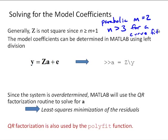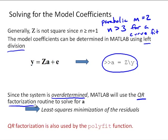The Z matrix is overdetermined, but MATLAB left division still works for overdetermined matrices. We ignore the residuals vector and let MATLAB use its QR factorization routine, which minimizes the least squares of the residuals — i.e., the sum of squares of residuals E. Hence the name linear least squares. This is still a least squares fit, but we no longer call it a regression. Incidentally, QR factorization is also how the polyfit function works internally.